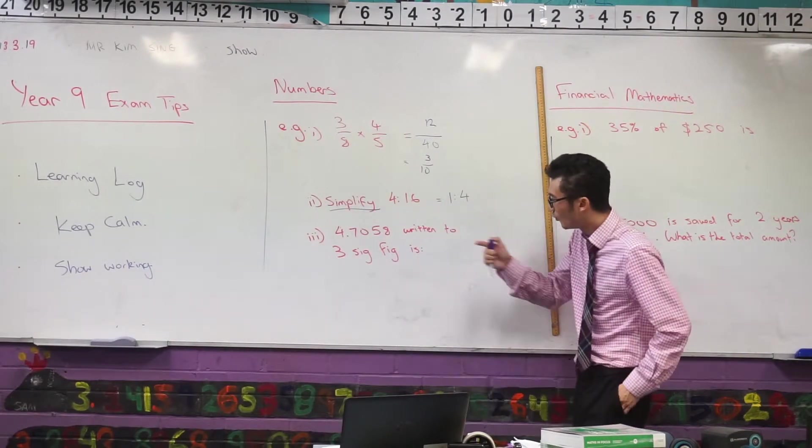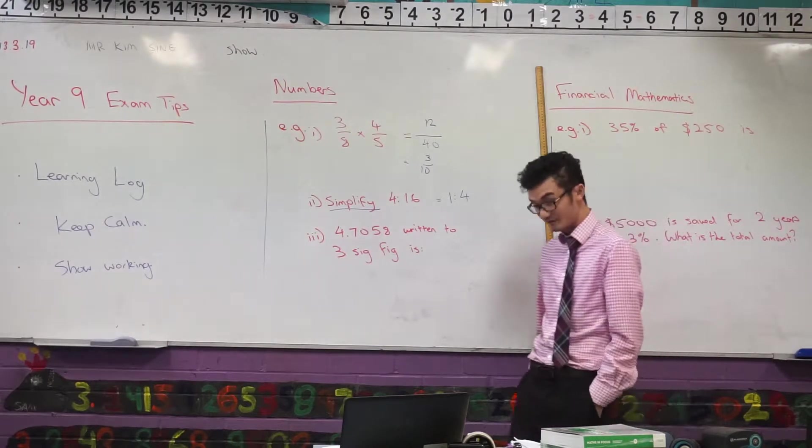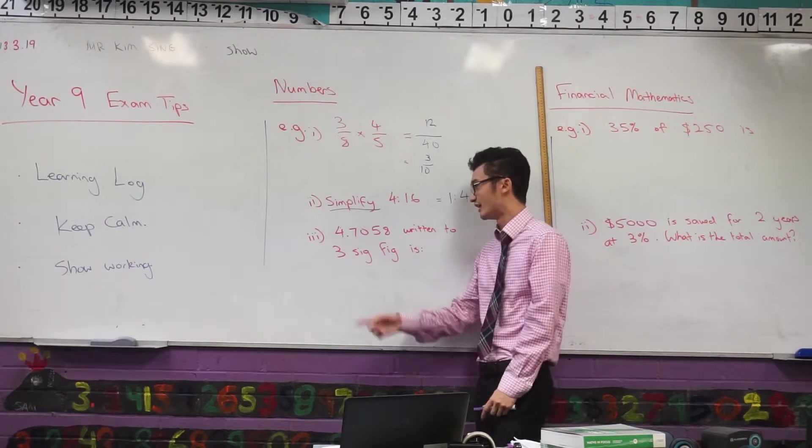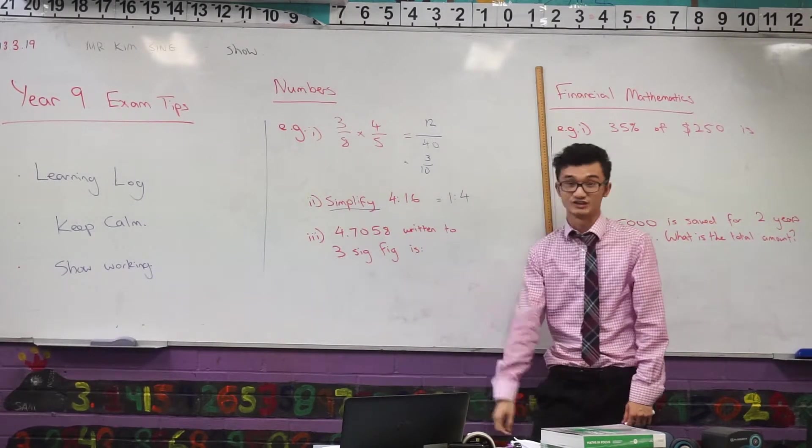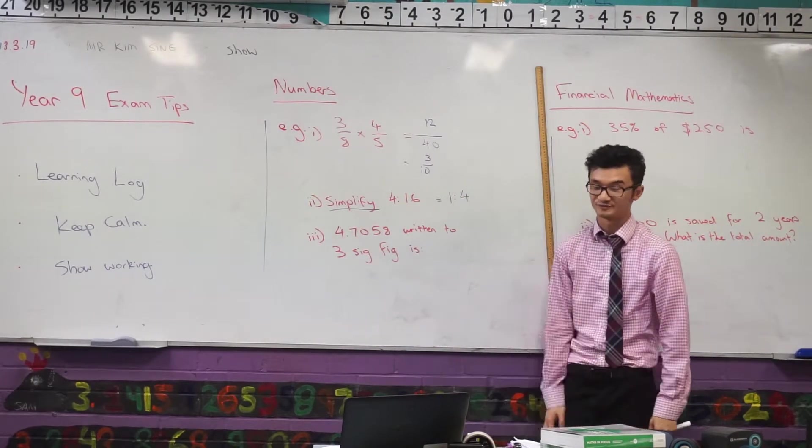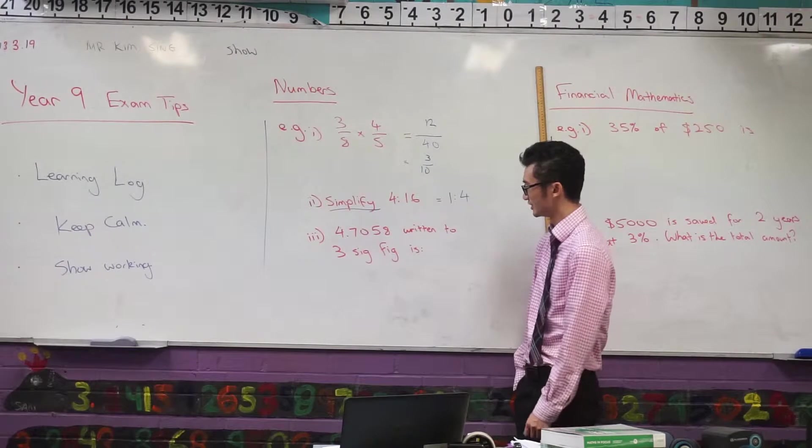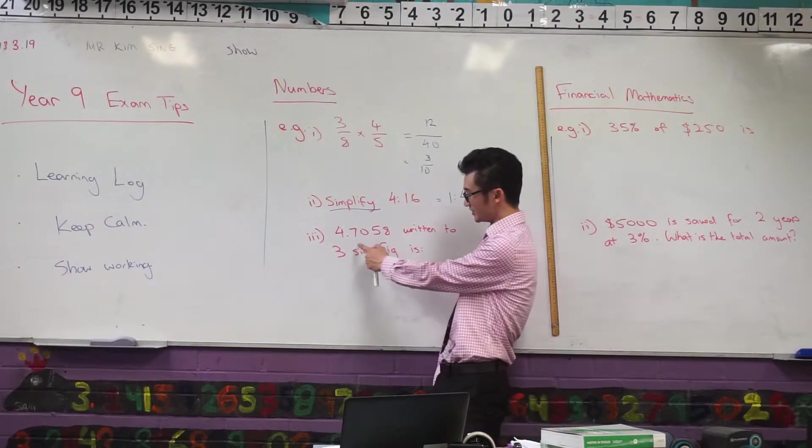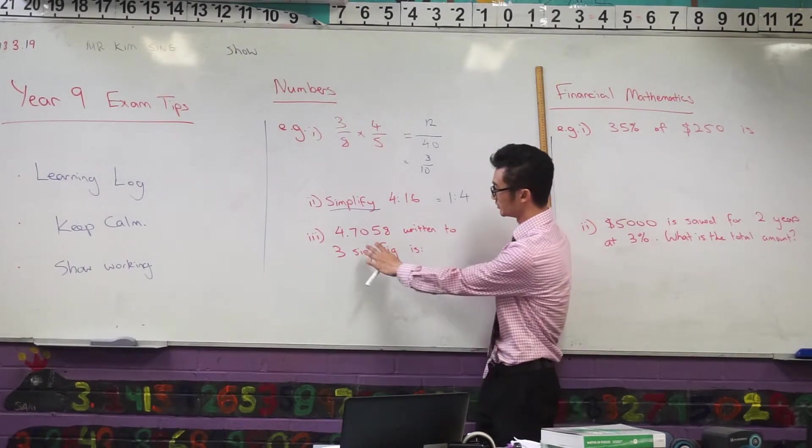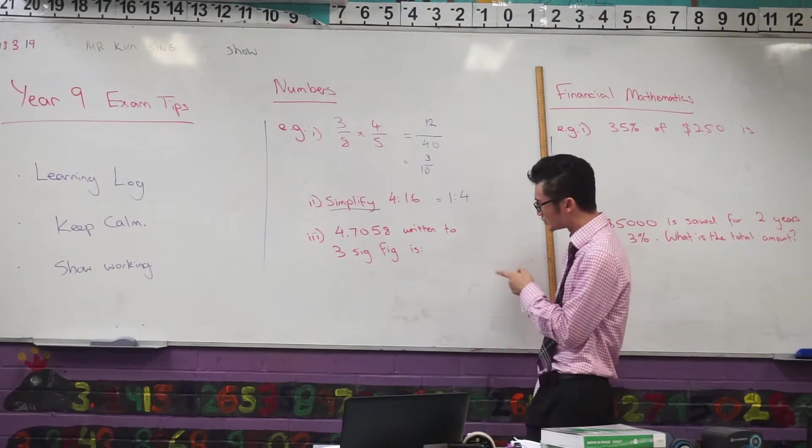All right, last one. This part: 4.7058, we want that written to 3 significant figures. Remember there's a whole heap of different rules with significant figures. One of the most important ones is that any non-zero digit is significant. So when I'm looking at these I know automatically the 4, 7, 5 and 8 are significant. The question about zero is that zero is sometimes significant. When is zero significant? Well one of the situations is when it's in between two significant digits then it is significant as well, and right now it's in between two non-zero ones so I know that zero in this case is significant.